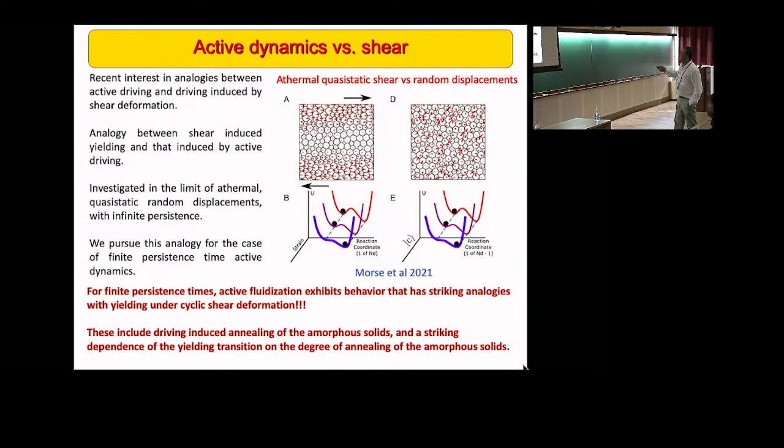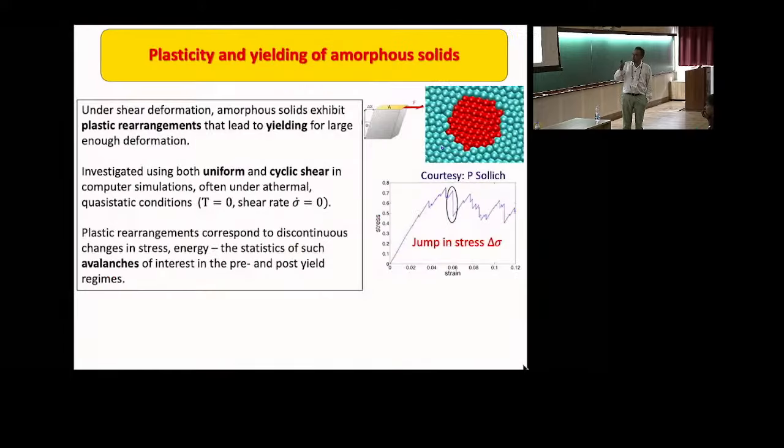This discussion was in the context of infinite persistence times. But for many examples of interest, we would be interested in looking at finite persistence times. The summary of our observations is that for finite persistence times, active fluidization exhibits behavior that has striking analogies with yielding under cyclic shear deformation. These include driving induced annealing of the amorphous solids that we're going to look at, and a striking dependence of the yielding transition on the degree of annealing of the amorphous solids.